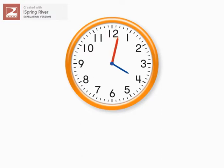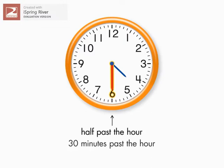Then demonstrate how the hour hand and the minute hand move to show the passage of half an hour. Half an hour is half of 60 minutes, or 30 minutes. Explain that when the minute hand is on 6, the time is half past the hour, or 30 minutes past the hour.